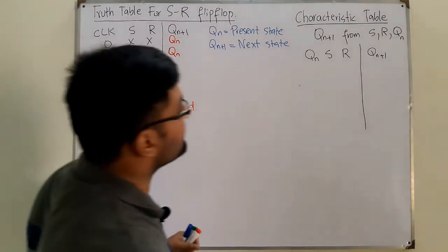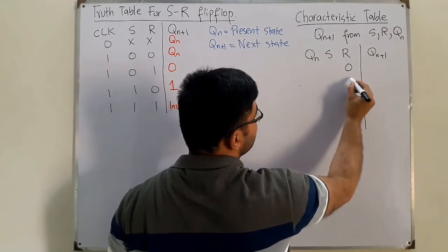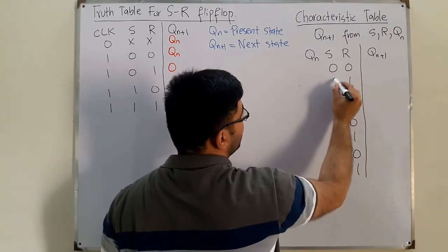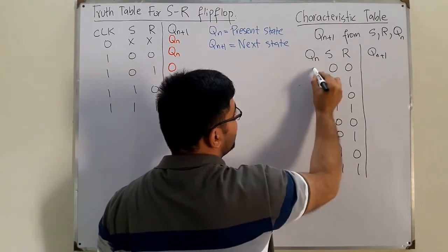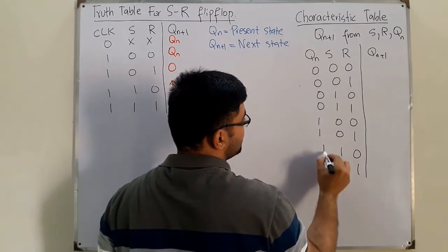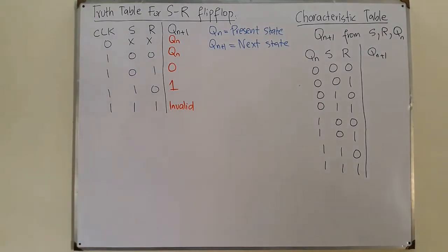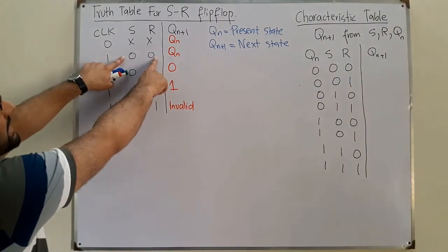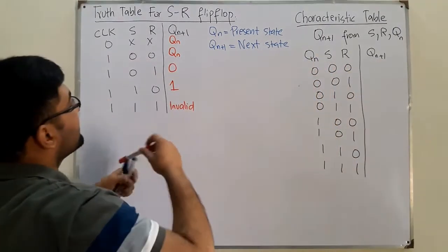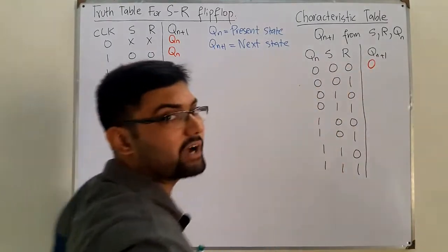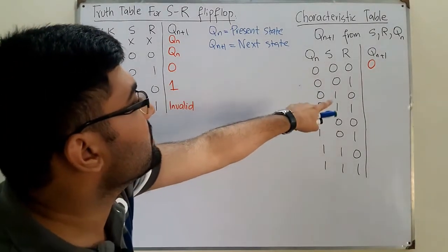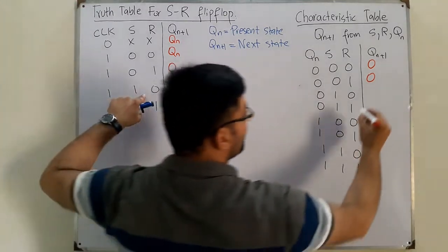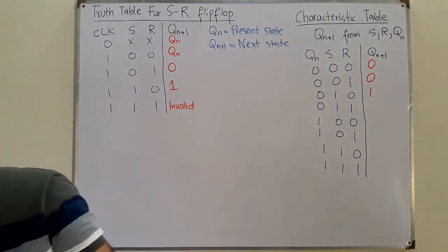In the characteristic table, the inputs are Q(n), S, and R, and the output is Q(n+1). We have three inputs, so there are eight possible combinations. When S and R are both 0, the next state equals the previous state, so Q(n+1) = Q(n). When Q(n) = 0, we have 0. When S=0, R=1, the output is 0. When S=1, R=0, the output is 1.